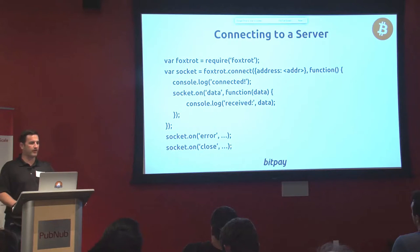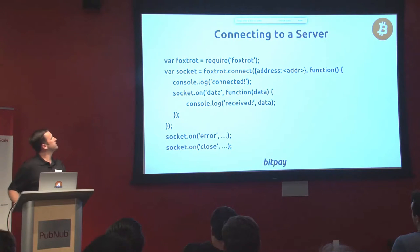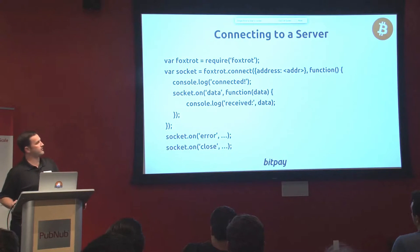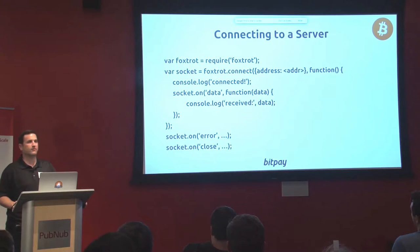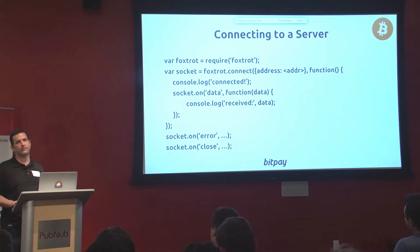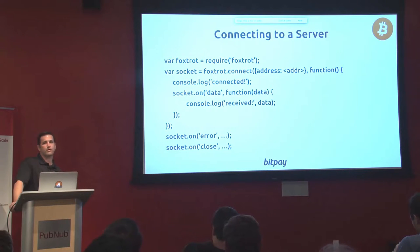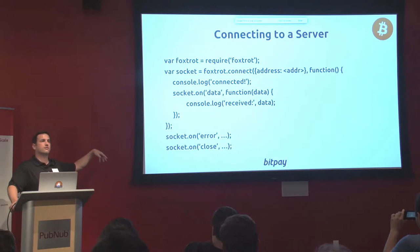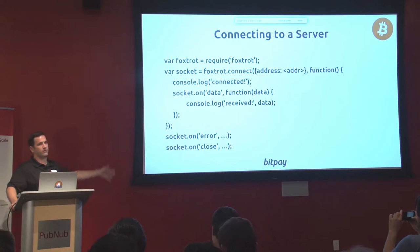On the client side, if you want to connect to a server, you create a Foxtrot instance and then tell it to connect, giving it the address — in this case, the public key. You wait on a data event to see data from the server. There are a few other handlers shown here for the error event and the close event — again, protocol-compatible with the Node.js Net module. So anywhere you're using normal socket code within Node.js, you could just drop in the Foxtrot socket instead.